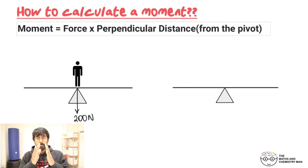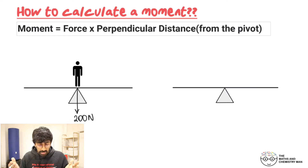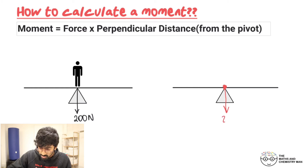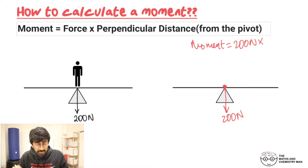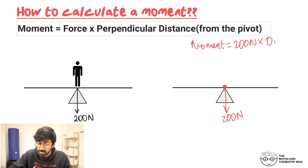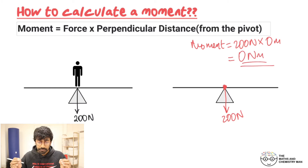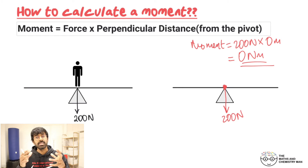What if the man was stood at the middle, right on the pivot point? The seesaw's not going to tilt anywhere. If we try to work out the moment: the force is 200 newtons, but the perpendicular distance from the pivot is zero — the man is standing on the pivot. So the moment equals 200 newtons times zero meters, which gives zero newton meters. There is no turning effect. If there is a force acting at the pivot point, its moment is zero, so you don't need to consider it.